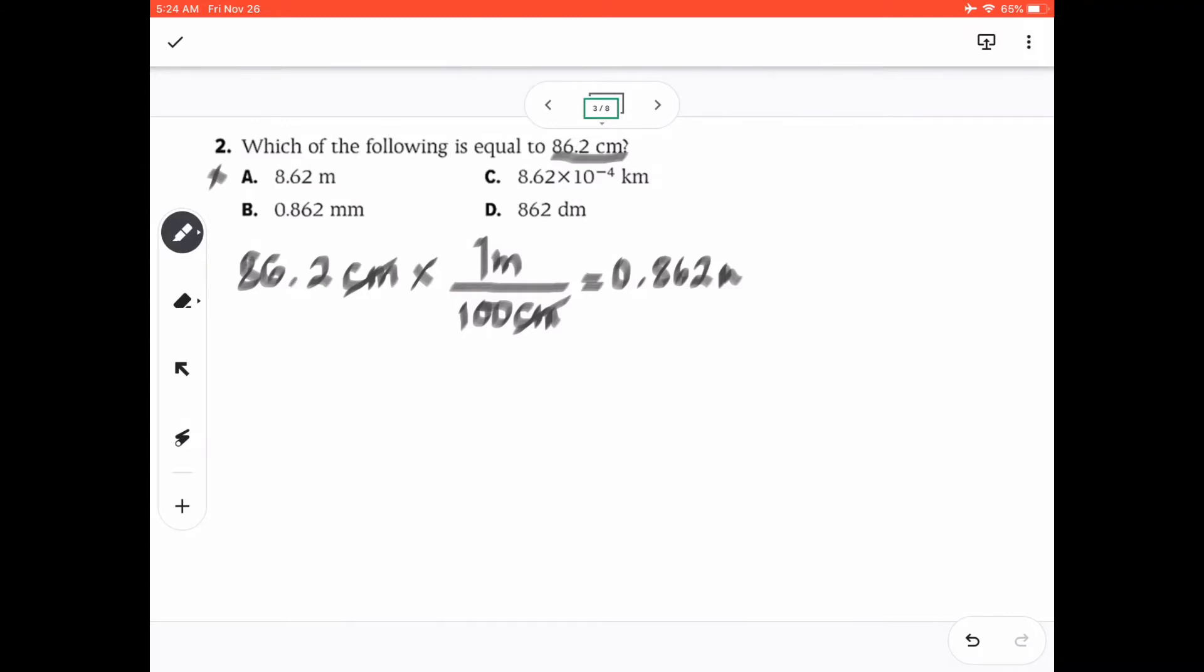Now, we'll change 86.2 cm to mm. There are two steps. We're first going to multiply to the conversion factor of 100 cm to meter, and then after that, we're going to multiply it to the conversion factor of 1 m is equal to 1,000 mm. We can cancel centimeter and centimeter and meter and meter. The answer for this will be 862 millimeters, which will eliminate again letter B.